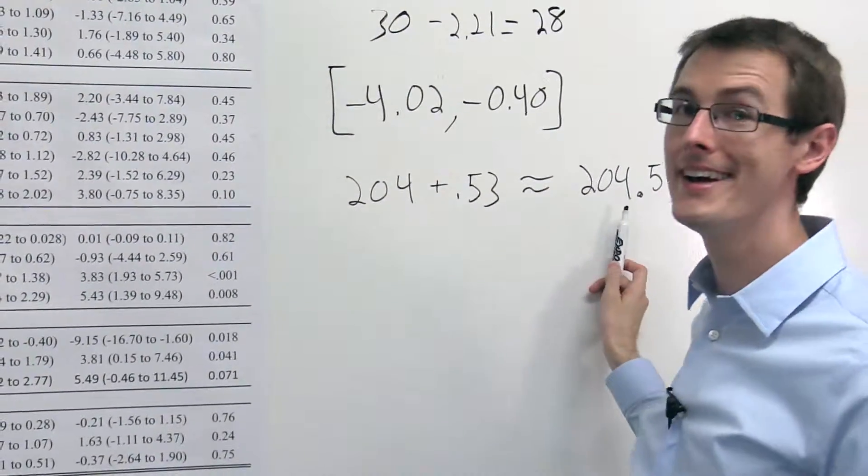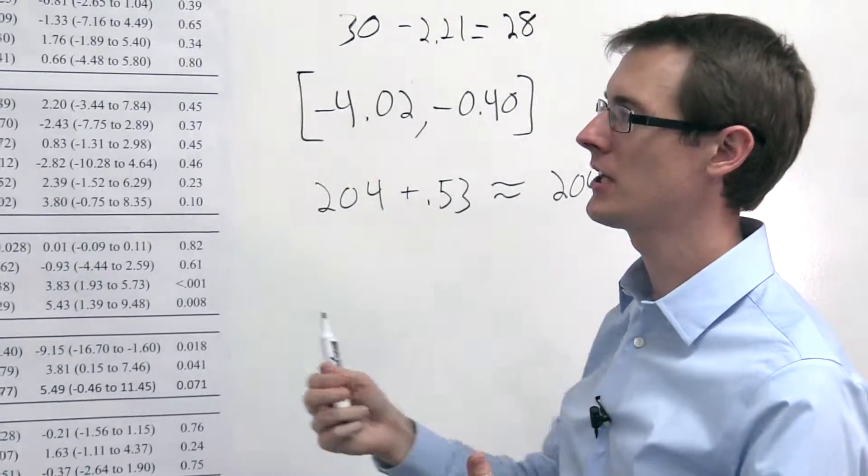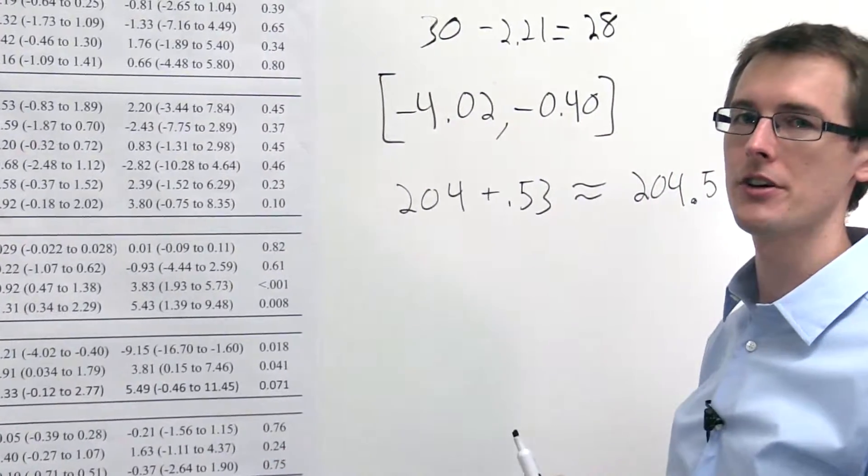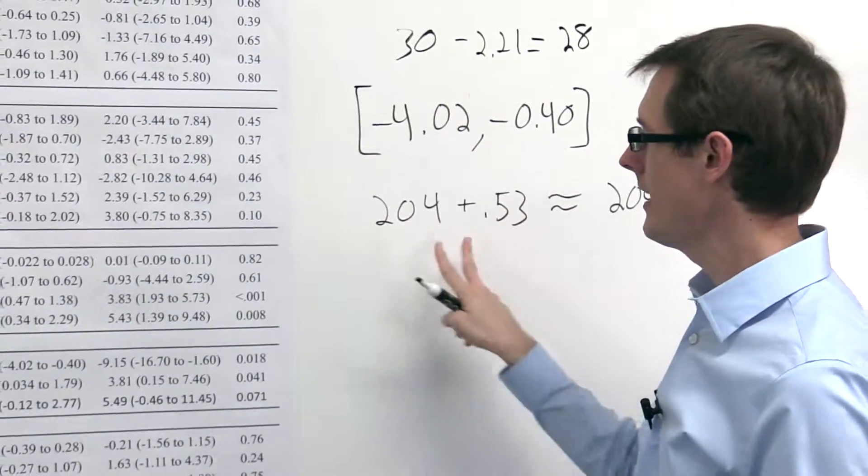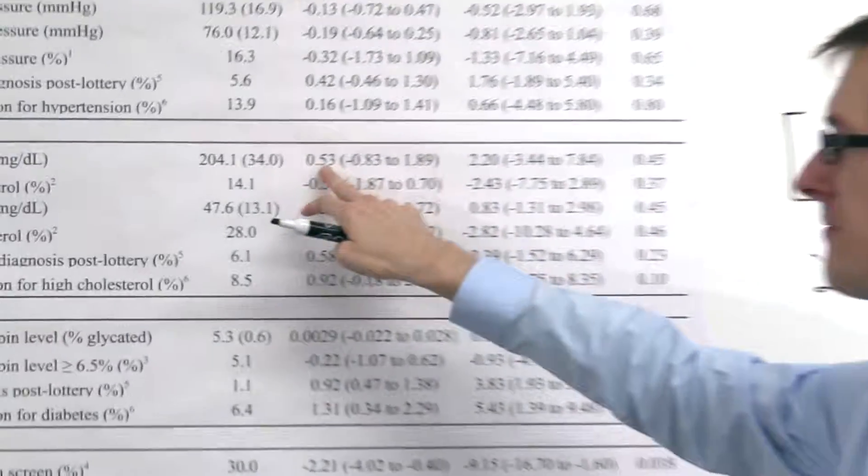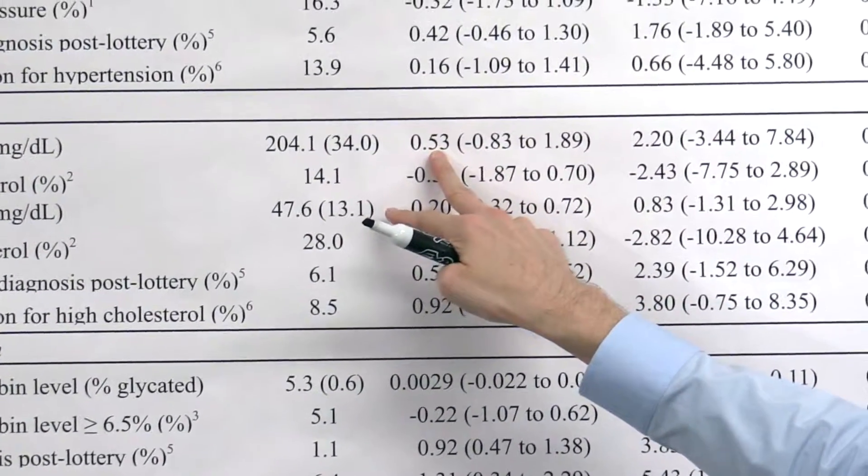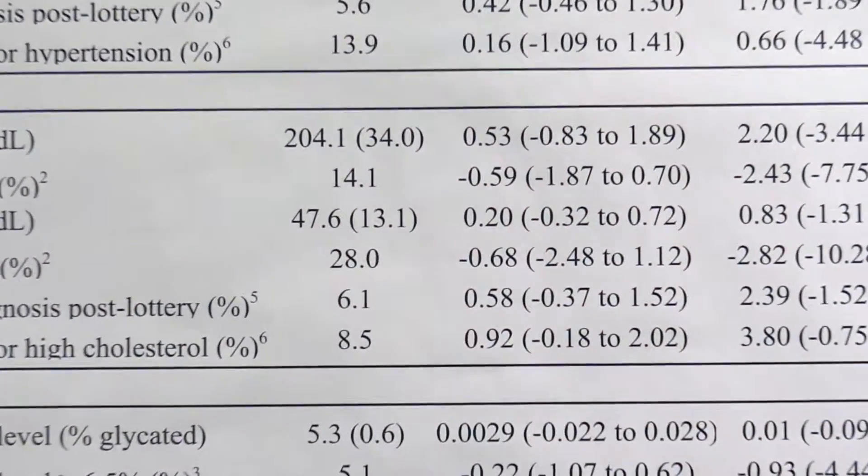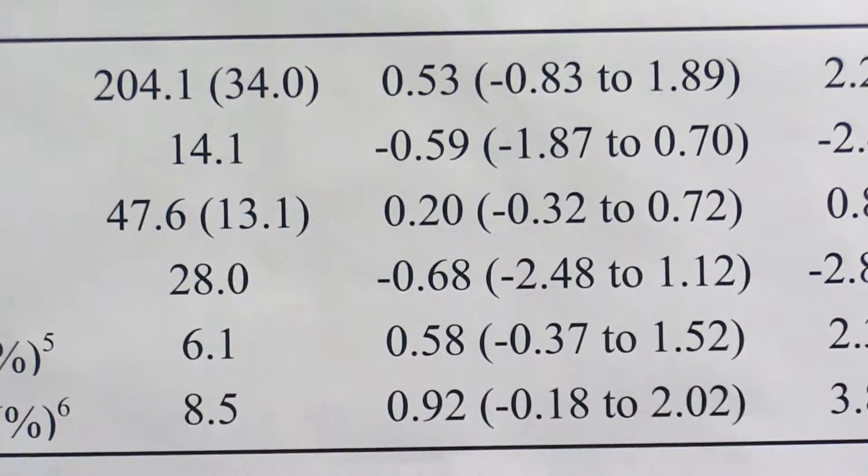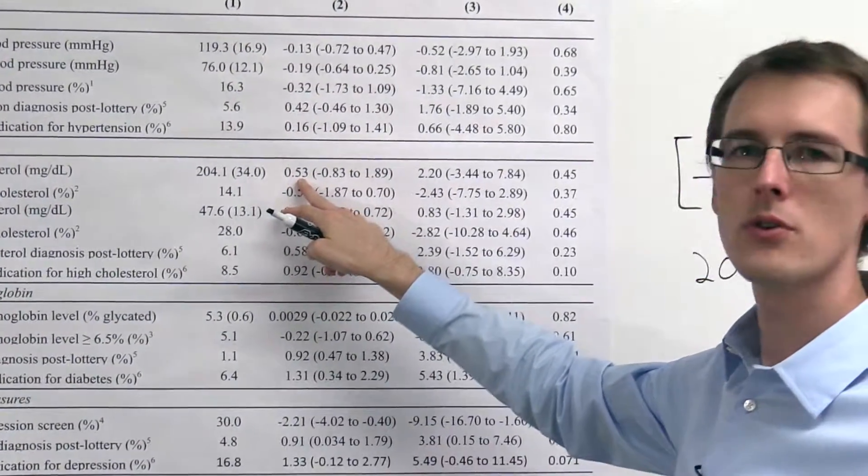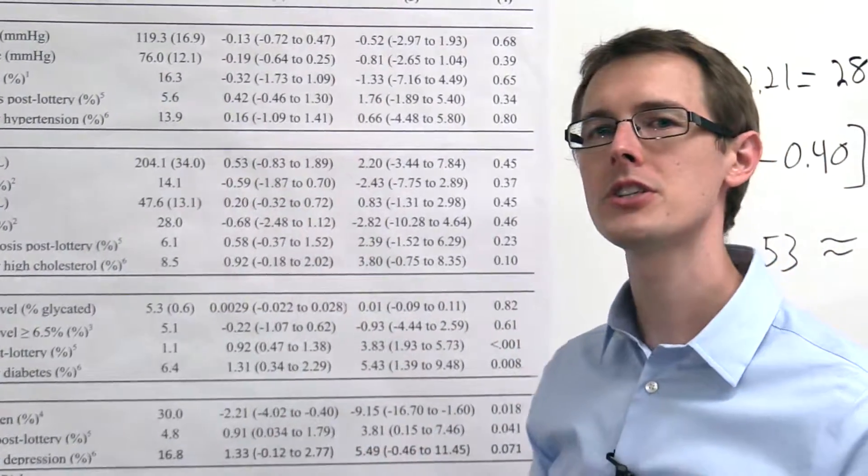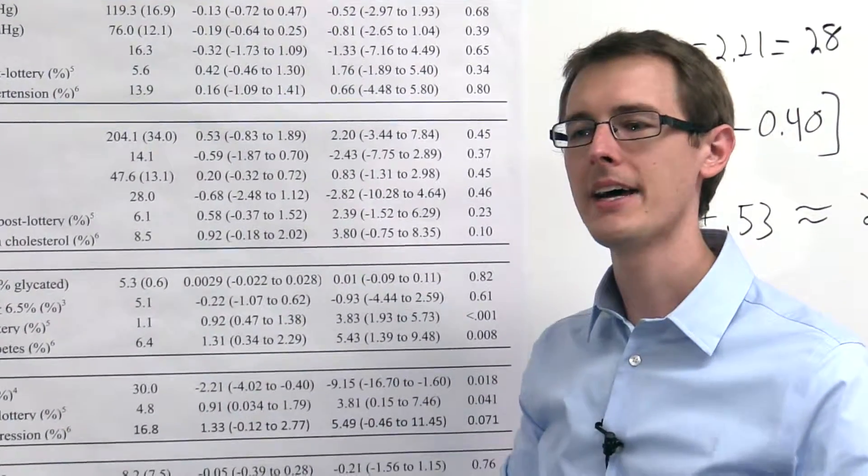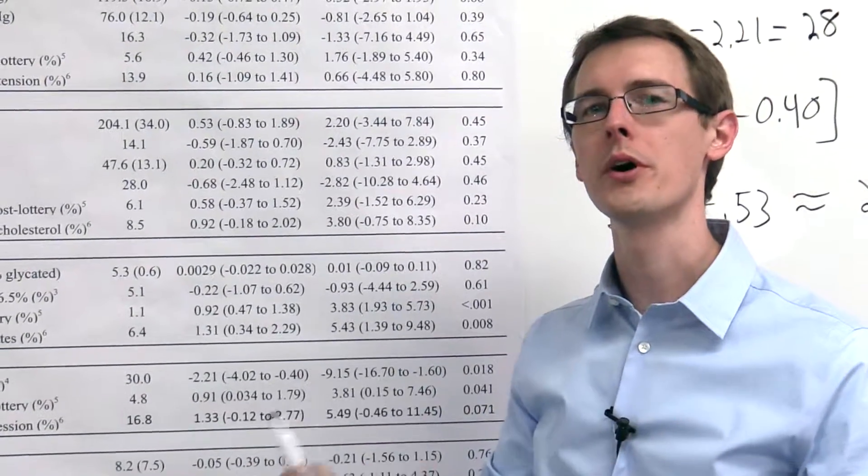So these numbers are pretty close. The average cholesterol in the treatment group and the average cholesterol in the control group are basically the same. So the difference is only 0.53. So again, we have to worry about, do we have a large enough sample to say whether this is a true causal effect, a true statistically significant causal effect, and not just the fact that we had random variation in who was put in what group.